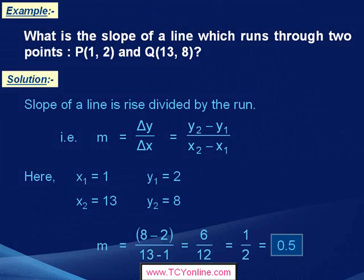Now, 6 over 12 can also be reduced as 1 over 2, that means 1 half. We can write 1 half as 0.5 in decimal form. So we can say that slope of a line which runs through these two points P and Q is simply 0.5.